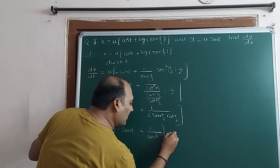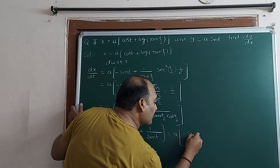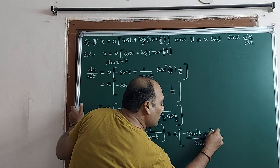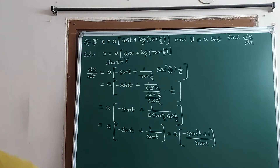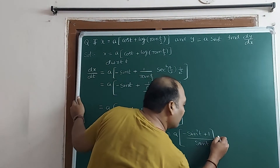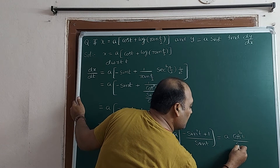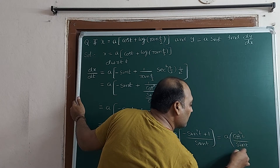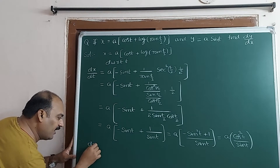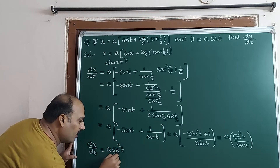Taking LCM: dx/dt = a times (−sin²t + 1)/sin t. Now 1 − sin²t = cos²t. Therefore dx/dt = a·cos²t / sin t. This is the value of dx/dt — put it in a box.